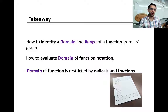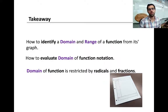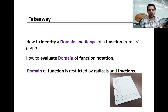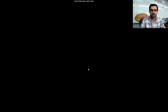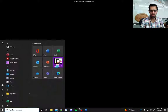Takeaway: we now know how to identify domain and range from a function and from a graph, and we know how to evaluate domains from function notation. Our two restrictions so far are radicals — where the expression inside must be greater than or equal to zero — and fractions — where the denominator cannot equal zero. That was a long lesson, but you stuck with it — good on you.